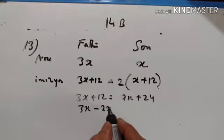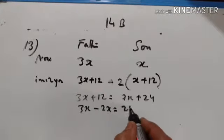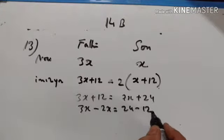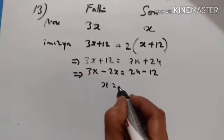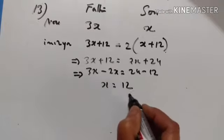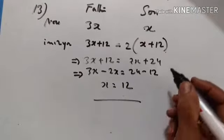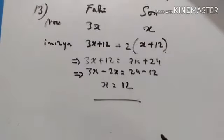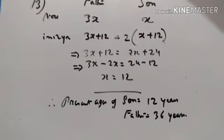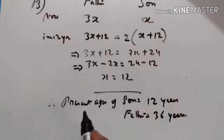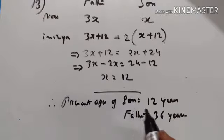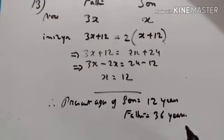3x minus 2x is equal to 24 minus 12, so x is equal to 12. The son is 12 years old. Therefore, the present age of the son is 12 years and the father is 3 times 12, which is 36 years.